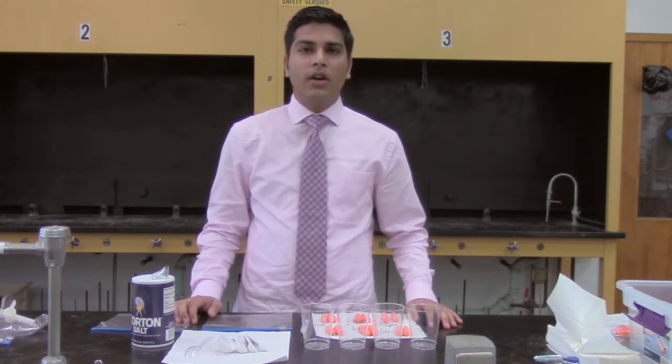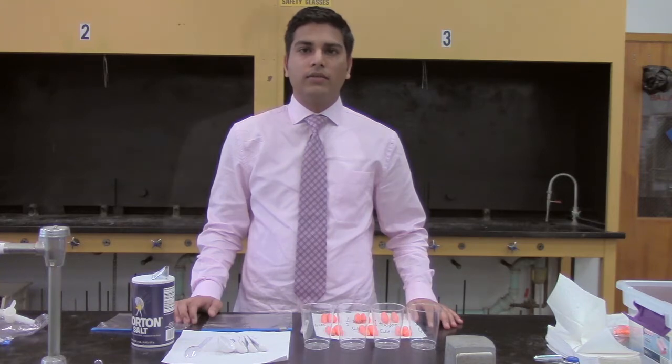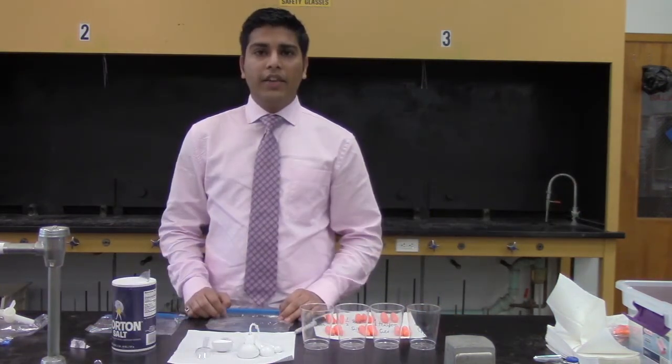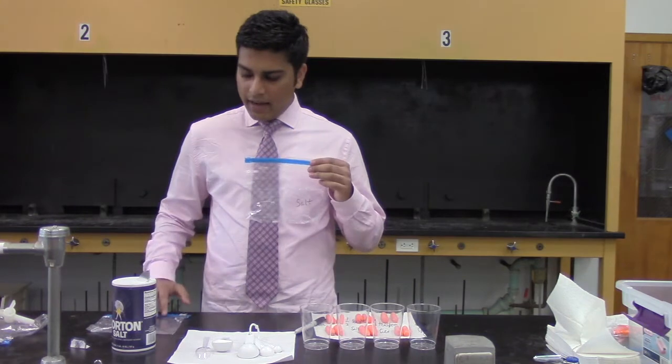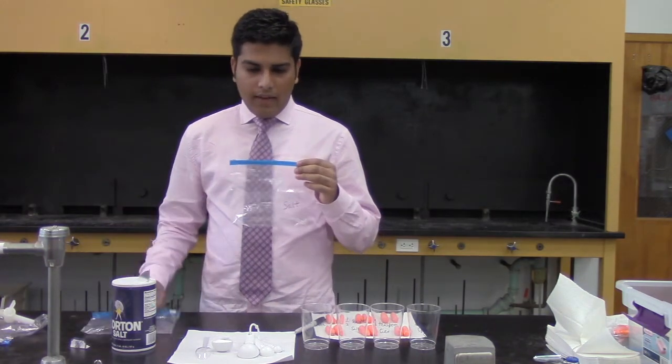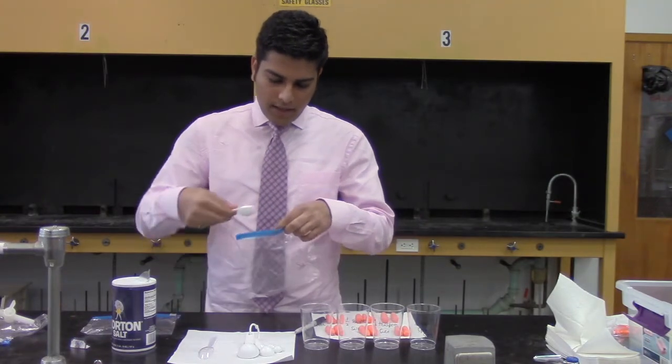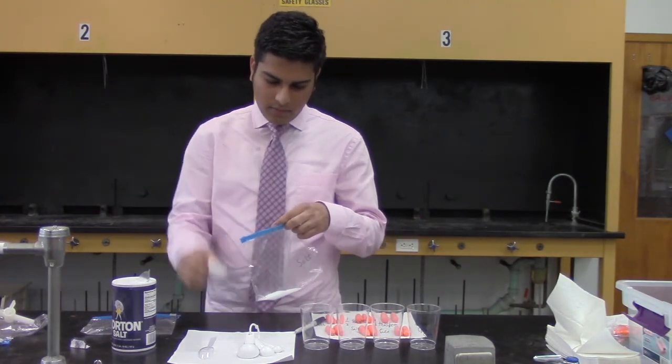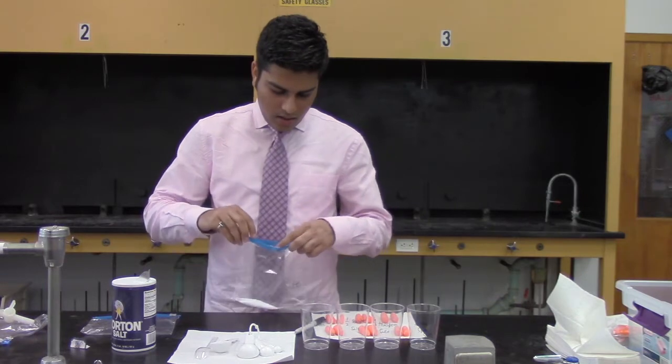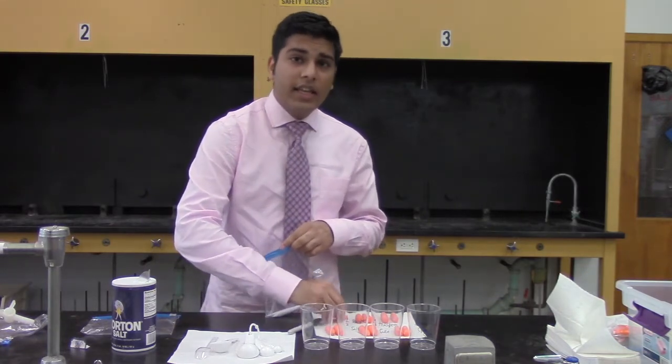First of all, label one bag as salt and the other bag as no salt. In the labeled bag salt, add one teaspoon of salt in it. Add two carrots in each bag.